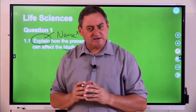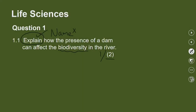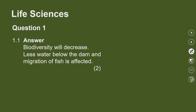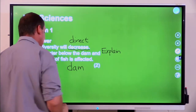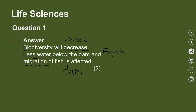Here's a nice answer. You give a direct answer first — the question asked how will it affect biodiversity, and you say outright: it will decrease. Then you start to explain. Less water will now flow below the dam, and what will be affected is the migration of the fish. You will now have a problem with biodiversity below the dam. The dam has made a major impact — but we need the dam, and that's what it's all about: the balance.